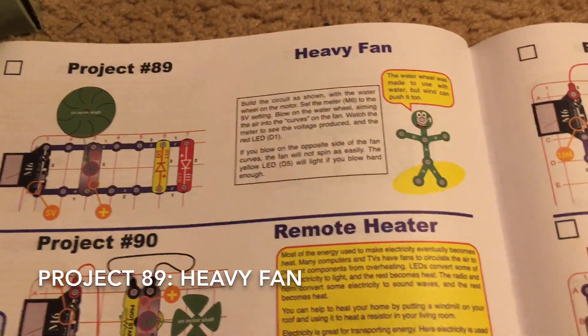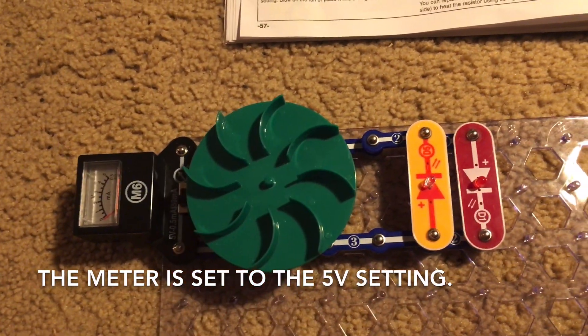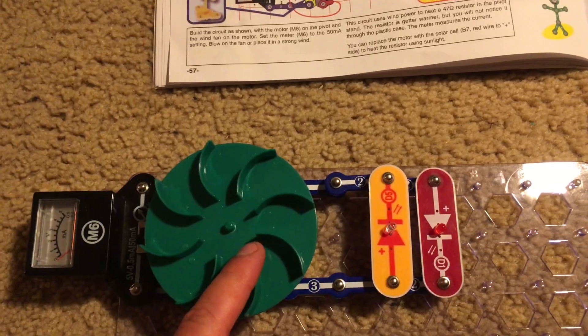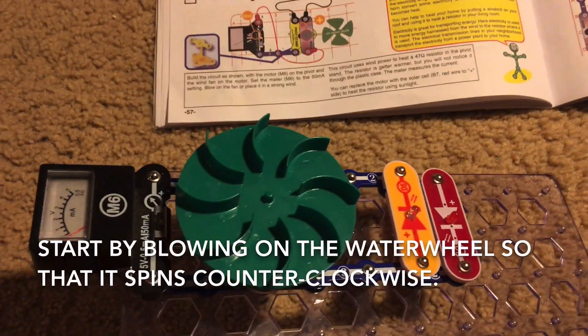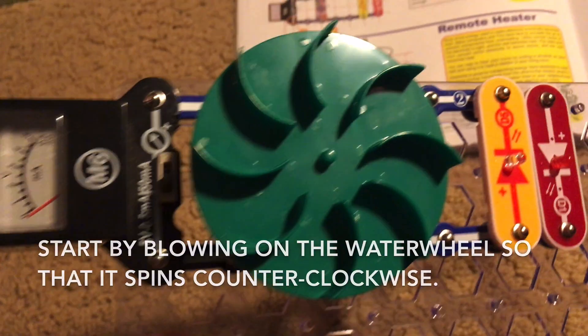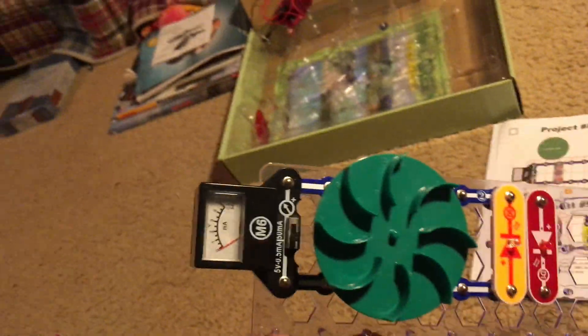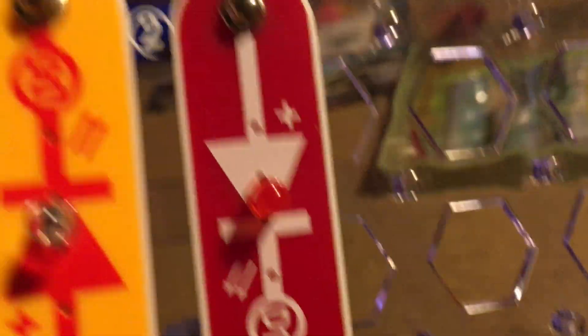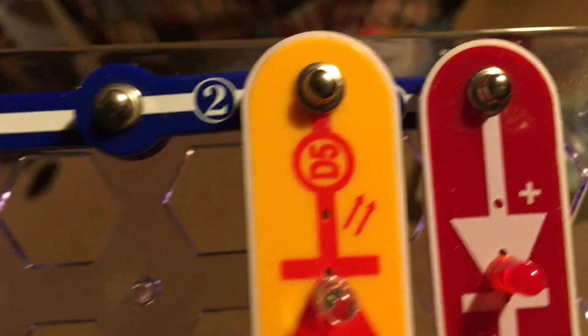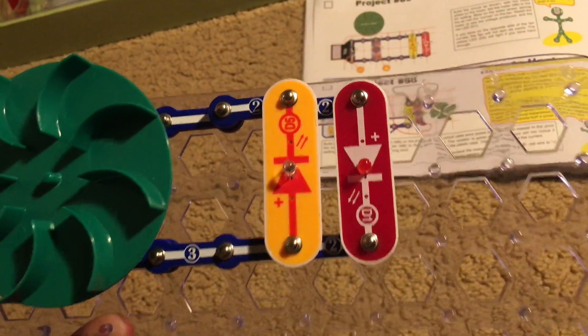89 is heavy fan. We will have the water wheel mounted on the motor and the objective is to blow onto the wheel so that it spins in a counterclockwise direction first. The meter will be on the 5-volt setting and I'm going to try blowing it and now watch the red LED. I don't know exactly how much voltage I produced, but it was enough to light the red LED.